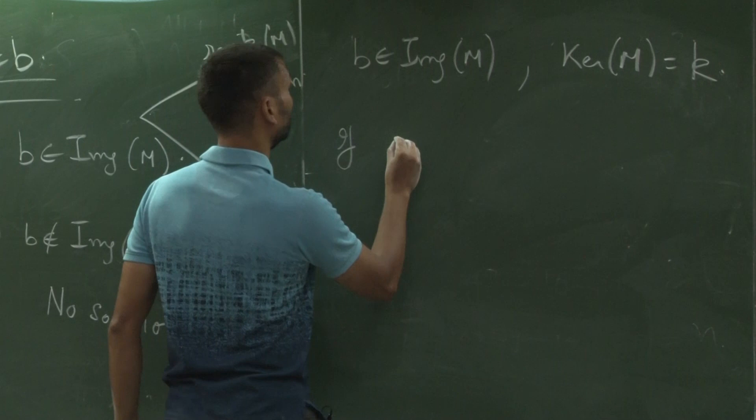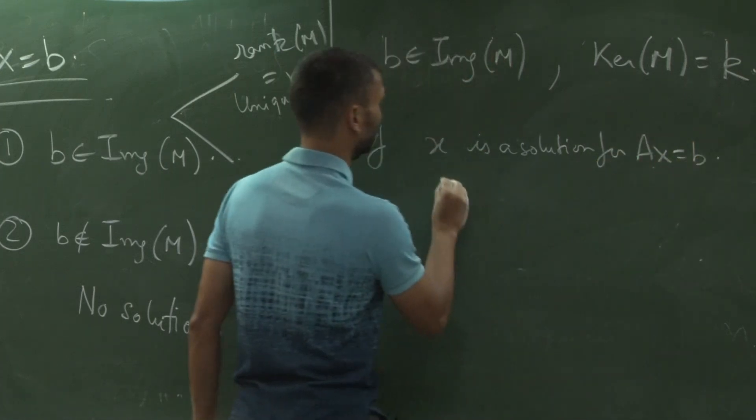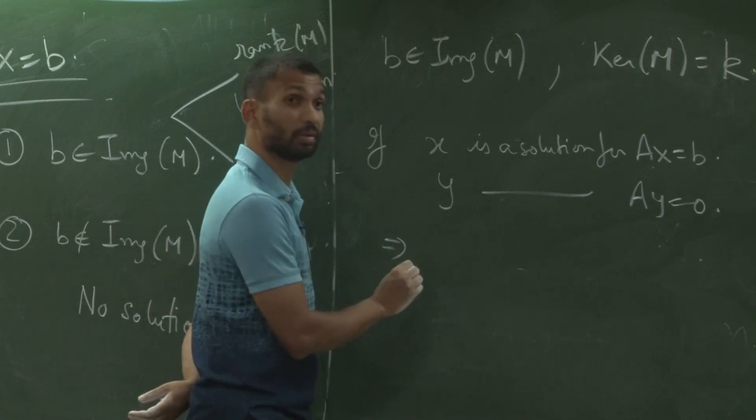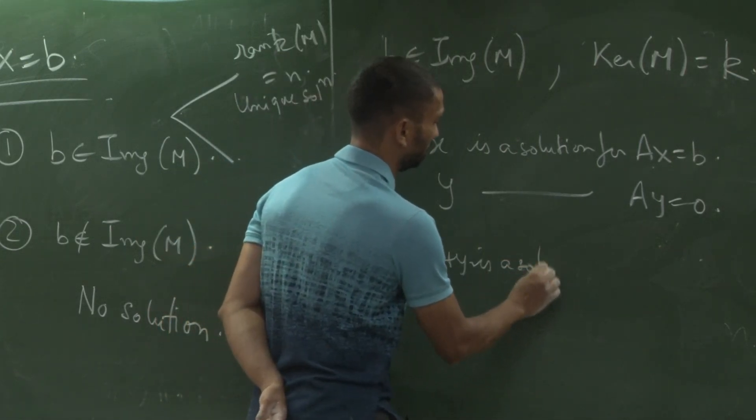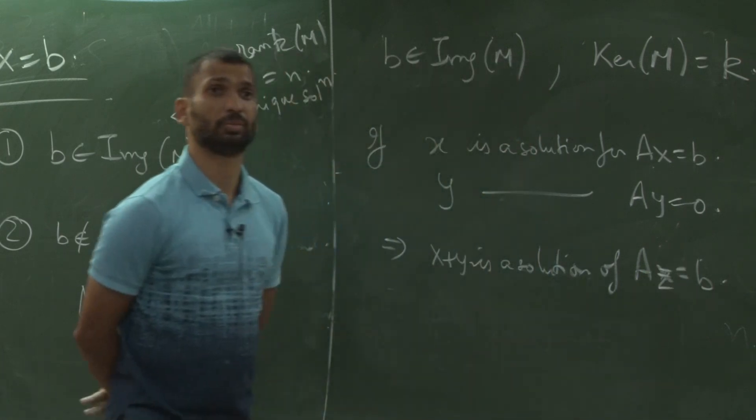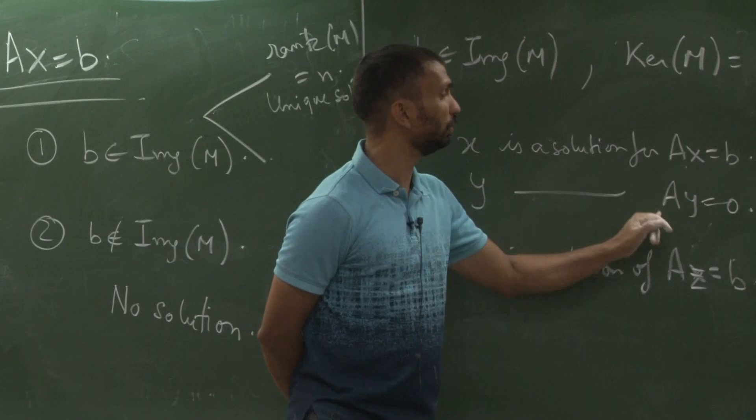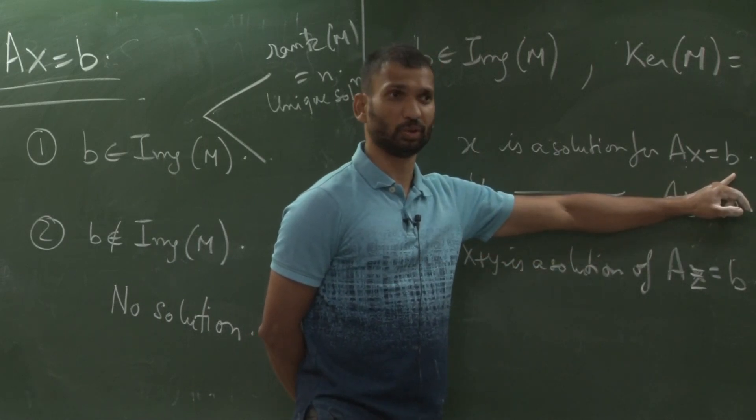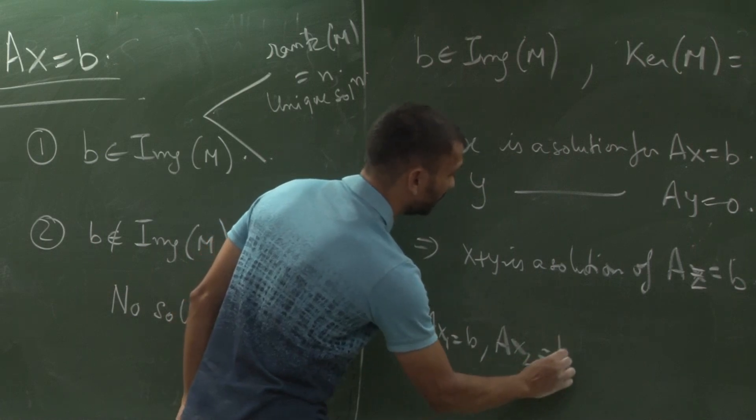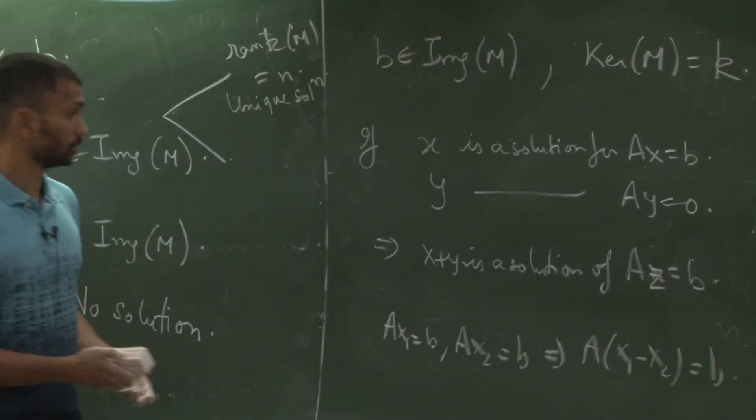If x is a solution for Ax equal to b and y is a solution for Ax equal to b. So Ax equal to 0, Ay equal to 0, Ay equal to 0, then x plus y, A let say. Do I need to prove this? Fine, right. If Ax equal to b and Ay equal to 0, A of x plus y is also equal to b, right. And on the other side, if Ax1 equal to b and Ax2 equal to b implies, sorry yeah, thank you.